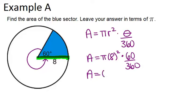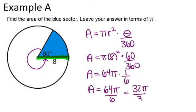So, 8 squared is 64, so this is 64 pi, and then 60 over 360 is 1 sixth, so I can rewrite that like this. So, my area is 64 pi divided by 6, which I can reduce to 32 pi over 3, and then we should have units squared.